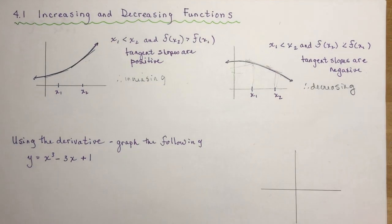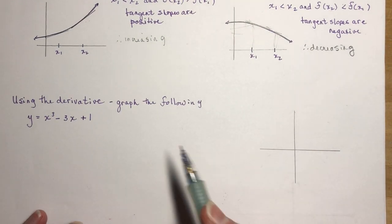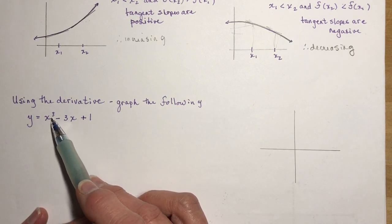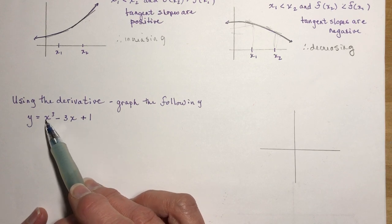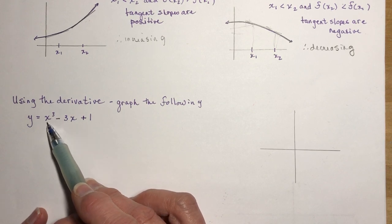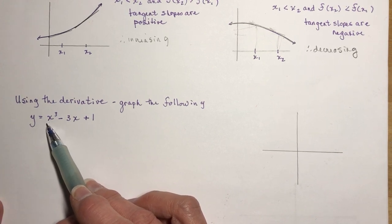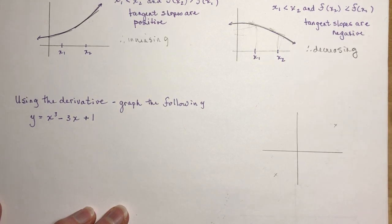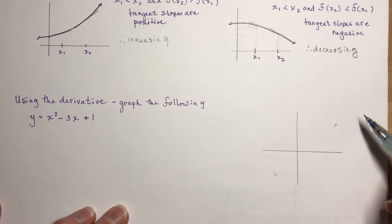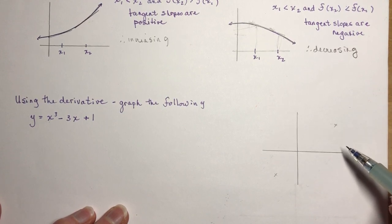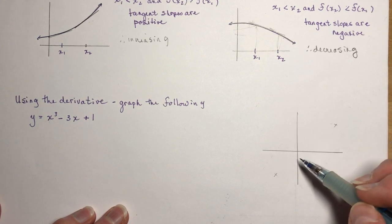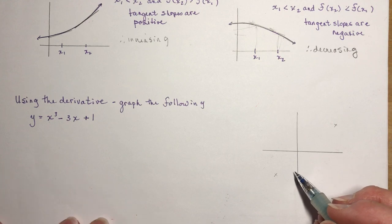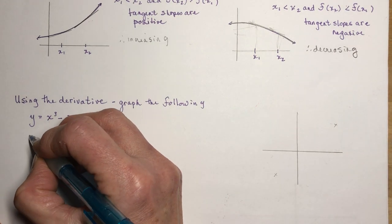Let's do some examples — using the derivative to graph a function. Using your knowledge from grade 12 advanced functions, you know this is a cubic function with a positive leading coefficient, so it starts in quadrant 3 and ends in quadrant 1. Don't just rely on calculus; use your previous course knowledge to check your answers.